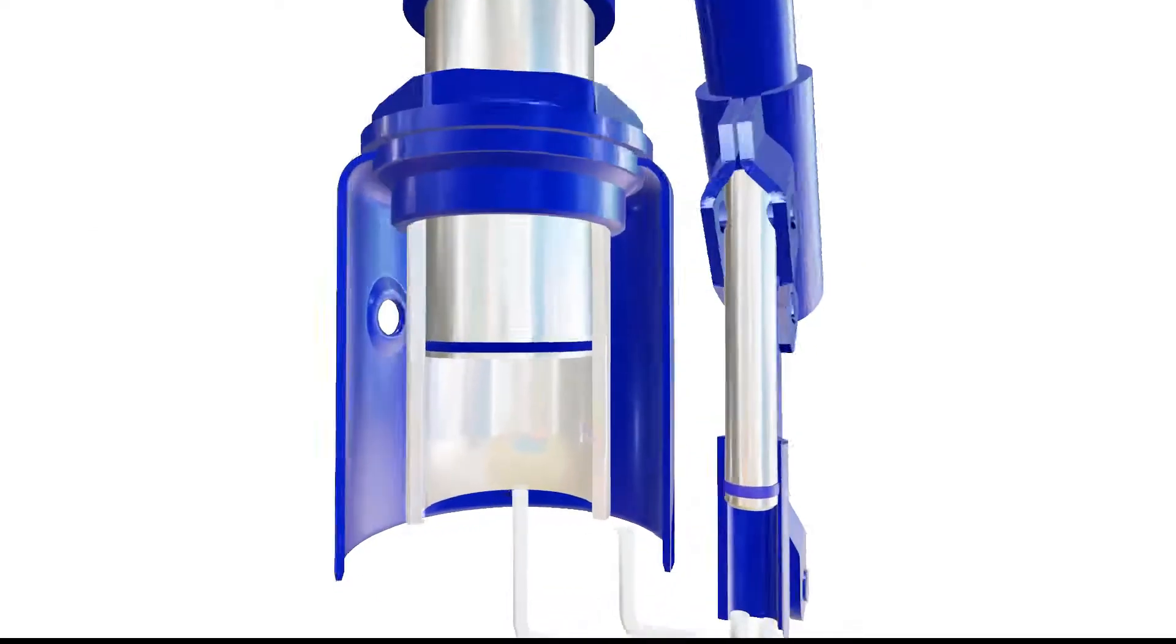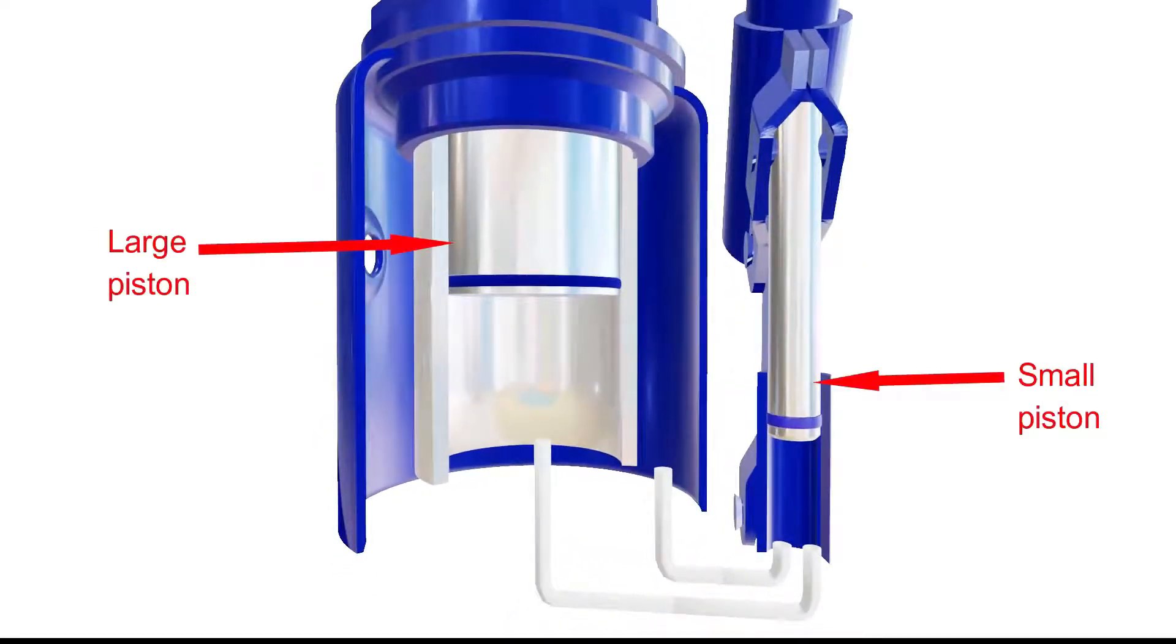The hydraulic jack has a smaller piston which is connected to a larger piston using a hollow tube. Let's understand how a hydraulic jack uses this setup to multiply the applied force.